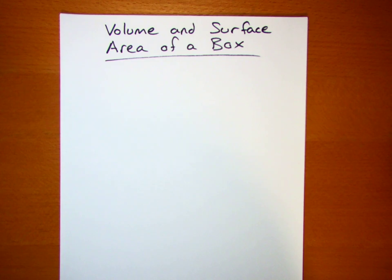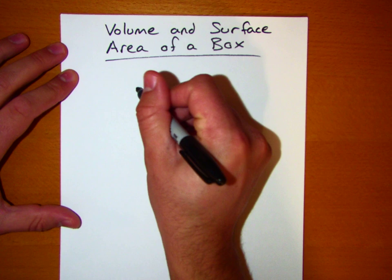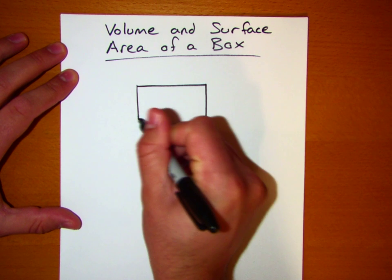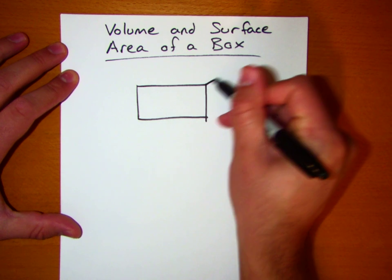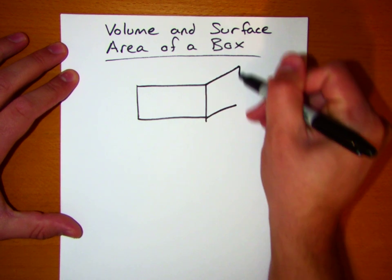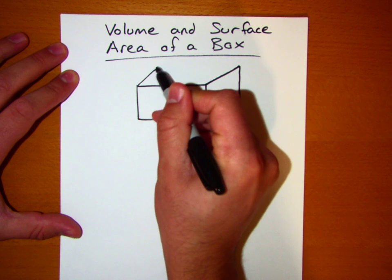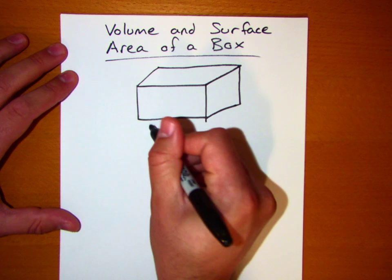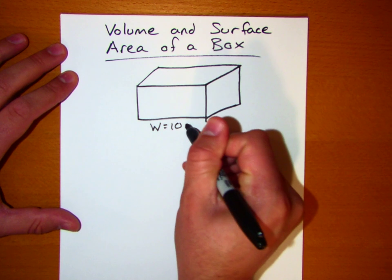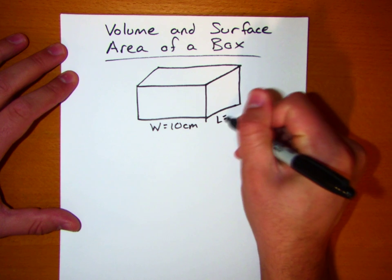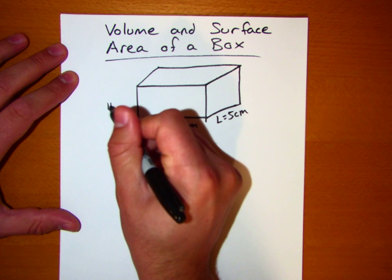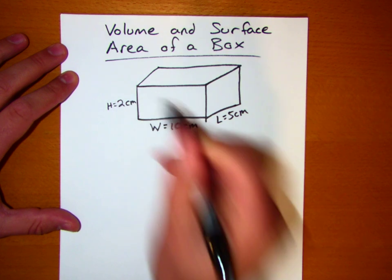When you say area, I'm going to assume that you're talking about the surface area of the box. So let's go ahead and start. This box is going to look something like this. And we're told it's got a width of 10 centimeters, a length of 5 centimeters, and a height of 2 centimeters.